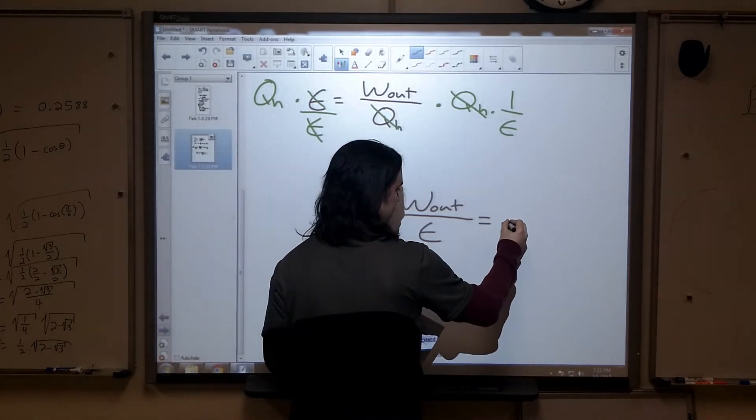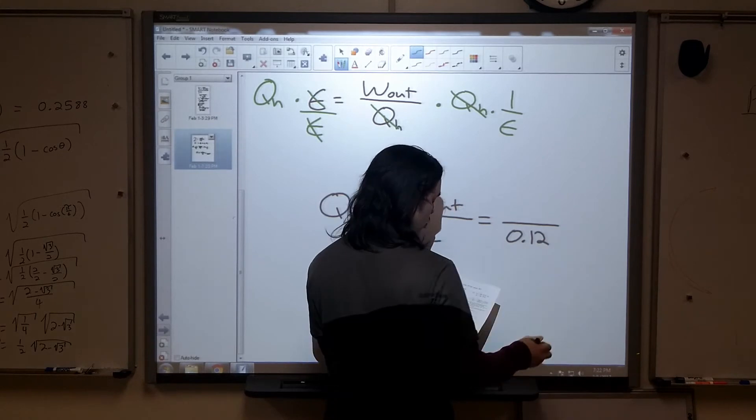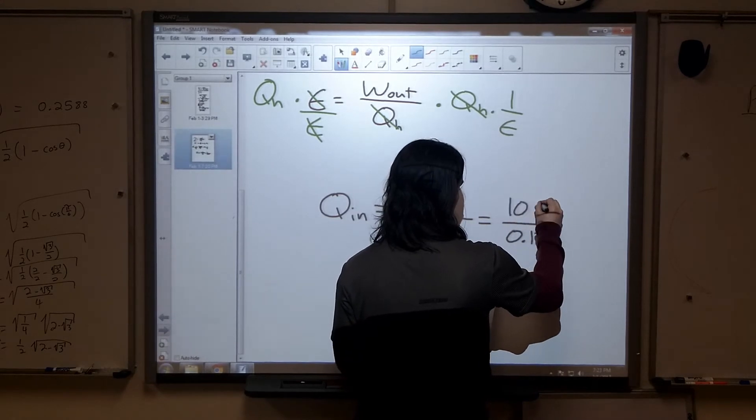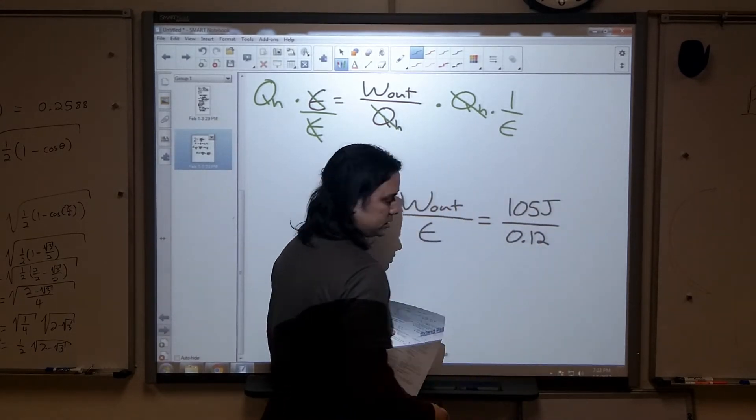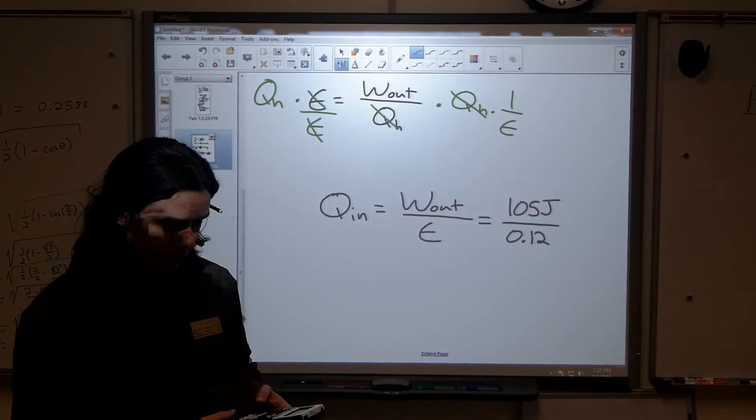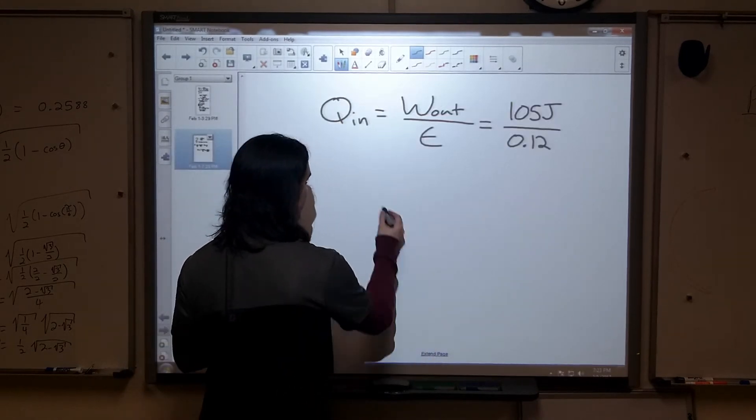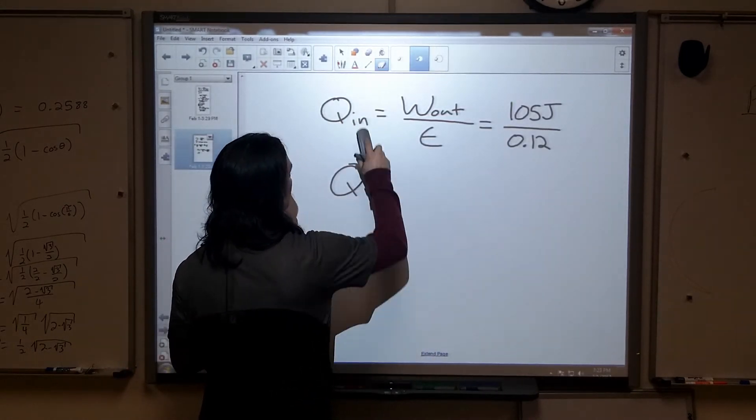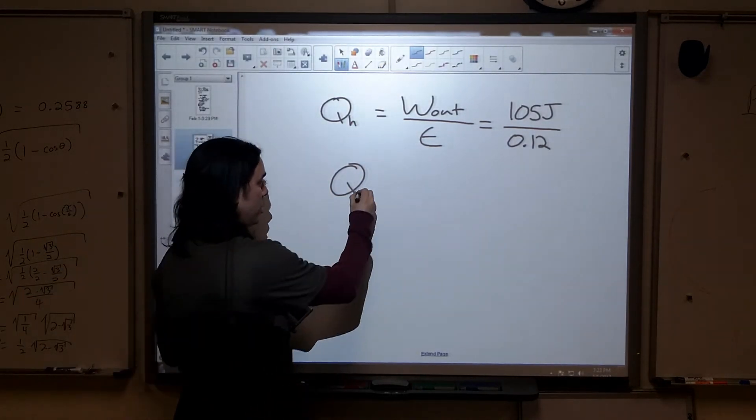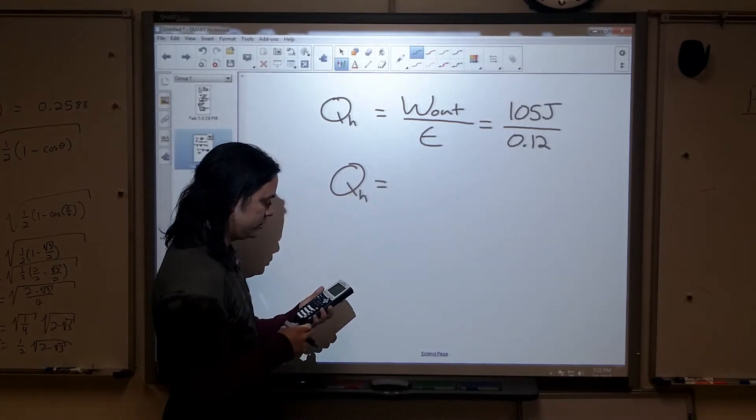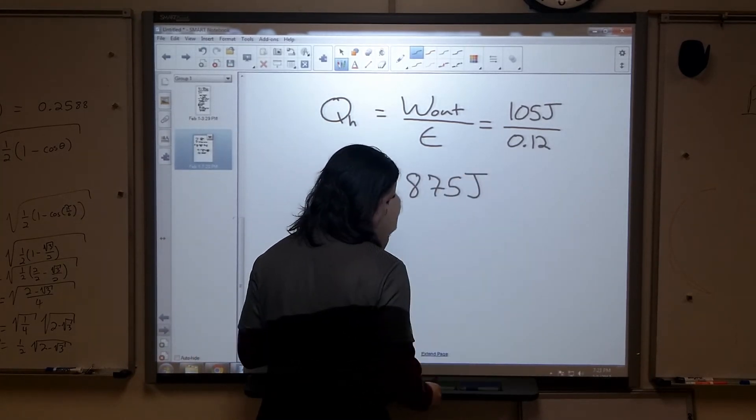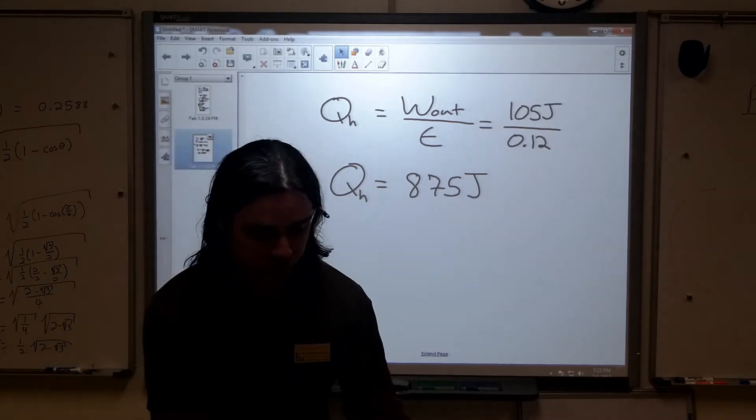Well, my information says that our efficiency was 12%, 0.12. There are no units on it, it's just a number. And our work was 105 joules. 105 divided by 0.12. We find that the heat, I'm sorry, I marked this Q in, which is still technically accurate, but we're talking about the heat from the hot reservoir. I've been thinking first law of thermodynamics a little too much recently. All right. This says that it should come up to 875 joules. That's the heat absorbed from the hot reservoir.